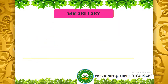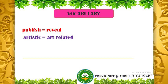At first, I would like to discuss some vocabulary. Number 1: publish means reveal. When a person writes a novel or poem and decides to publish, he or she has to take the help of a publisher. Artistic means art-related. We have to do many things in an artistic way. Century means hundred years, you know.